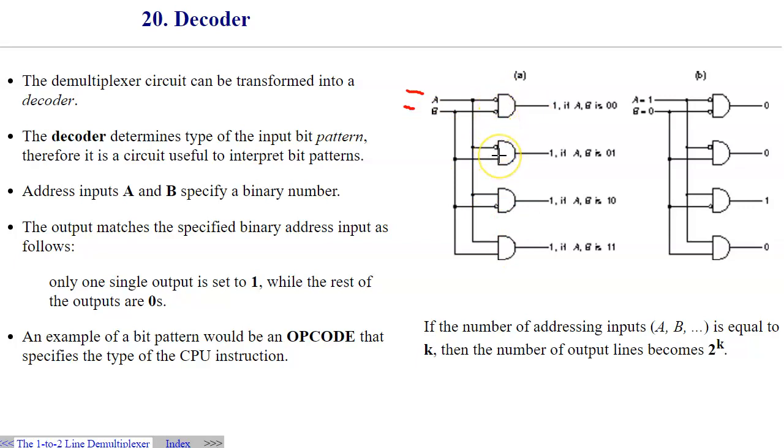It indicates which pattern is active. For instance, if both are 11, then the decoder will say that this is this specific input pattern 11, and only this wire will be set to 1, whereas the rest of them will be set to 0.